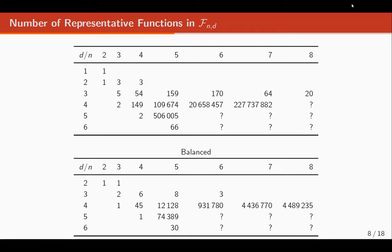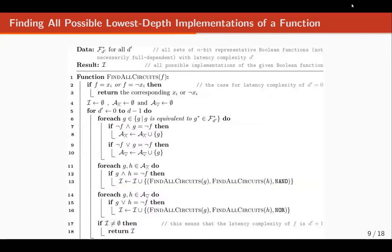Using this algorithm, we were able to find the latency complexity of all boolean functions up to five bits, and also all boolean functions up to eight bits with latency complexity four. We also introduce a new algorithm to find all possible implementations for a boolean function, where F is the target function and G is a candidate sub-circuit.